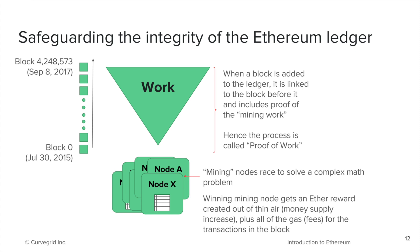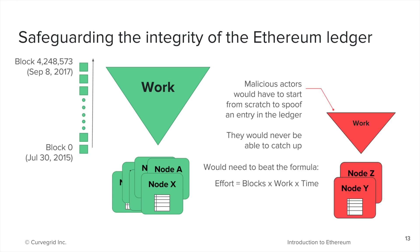This creates an economic incentive to participate in securing the network by mining blocks rather than acting against it. In Ethereum, a block is mined roughly every 12 seconds. Since each block includes a link to the previous block along with proof that work was done, in order to spoof an entry on the Ethereum blockchain ledger, a malicious actor would need to regenerate every block from the very start. A simple approximation of the amount of effort involved would be blocks multiplied by work multiplied by time — an immensely large amount of computational power that in practice means they would never be able to catch up.